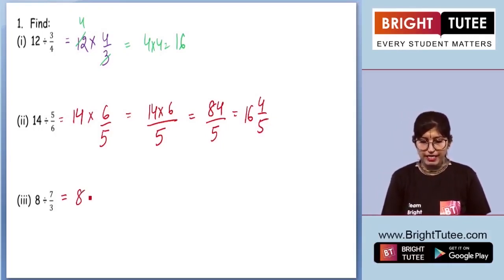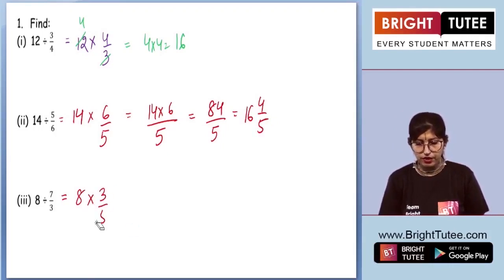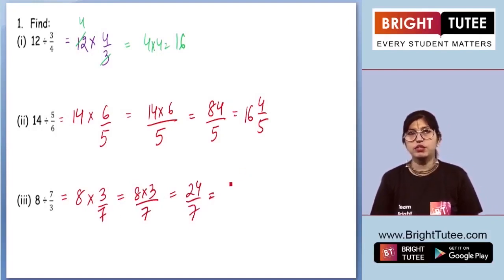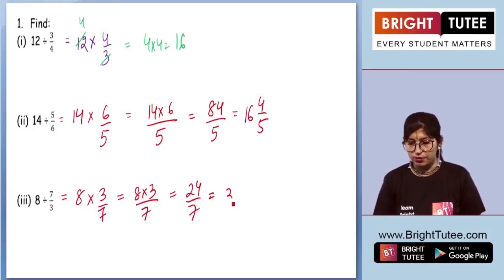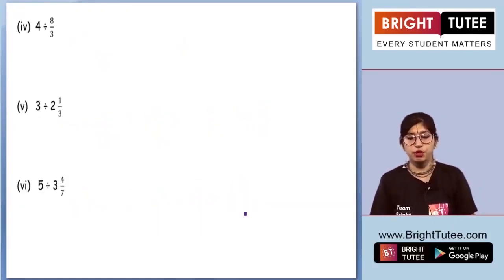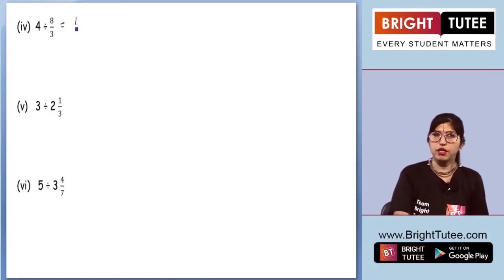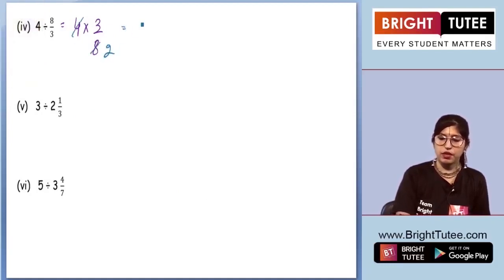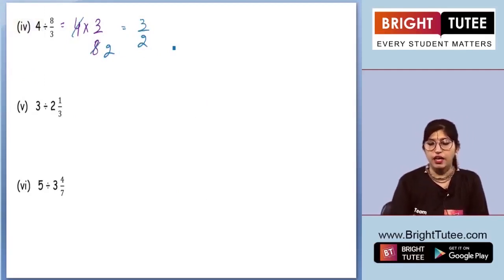Moving on to the next part: keeping 8 as it is and finding the reciprocal of 7 by 3, which is 3 by 7. We cannot cancel anything out, so it will be 8 times 3 by 7, which is 24 by 7, giving us 3 and 3 by 7. For the fourth part, 4 multiplied by 3 by 8 — here we can cancel, so we are left with only 3 by 2 as our final answer.